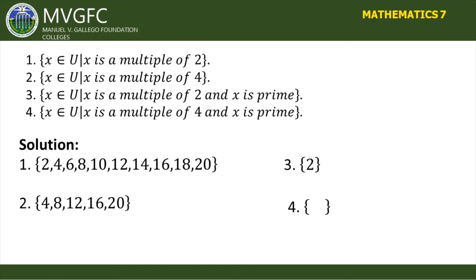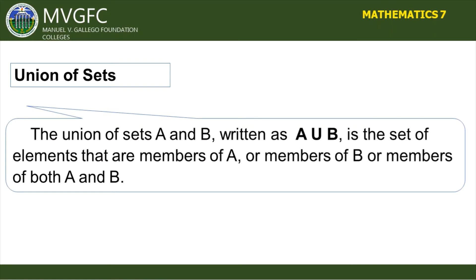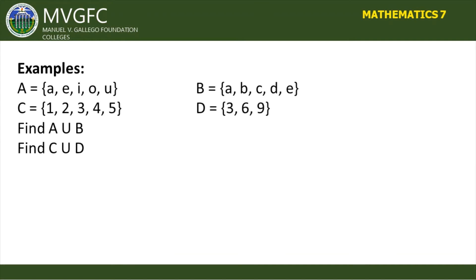After learning the different kinds of sets, we now proceed to the different operations performed on sets. The first operation is the union of sets. The union of sets A and B, written as A ∪ B, is the set of elements that are members of A, members of B, or members of both A and B.